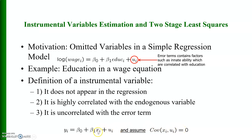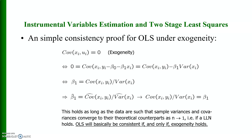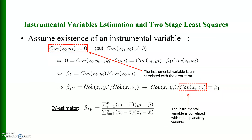Here x_i is basically education. This is a reconsideration of OLS in the simple regression model. A simple consistency proof for OLS under exogeneity: if the covariance between x_i and u_i equals zero, then x_i is not endogenous. This holds as long as sample variances and covariances converge to their theoretical counterparts as n approaches infinity. OLS will be consistent if and only if there is exogeneity in the equation.